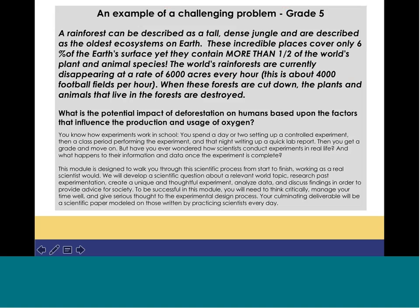Here's a fifth-grade example. A rainforest can be described as a tall, dense jungle — described as the oldest ecosystems on Earth. These incredible places cover only 6% of the Earth's surface, yet contain more than half of the world's plant and animal species. The world's rainforests are currently disappearing at a rate of 6,000 acres every hour — about 4,000 football fields per hour. When these forests are cut down, the plants and animals that live there are destroyed. The essential question generated was: what is the potential impact of deforestation on humans based upon the factors that influence the production and usage of oxygen? This was designed for students based on a gap area in their instructional knowledge.